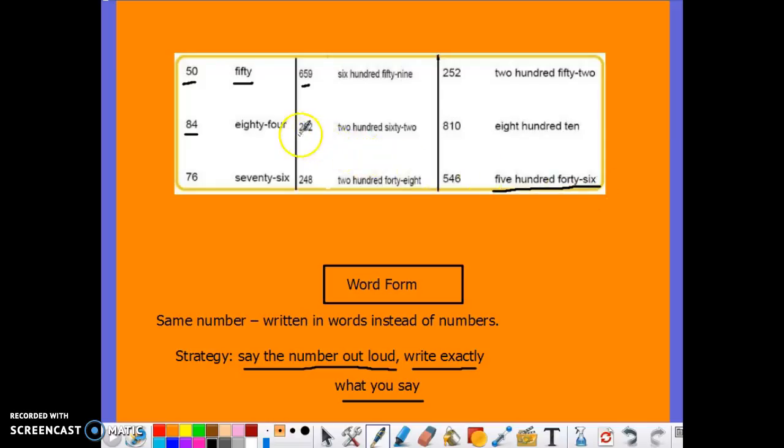The same goes for a number like 2, 6, and 2. When I put the digits 2, 6, and 2 together, we say that as 262. So whatever I would say, that's how I would write it.